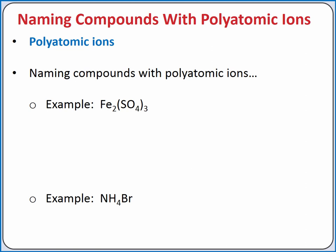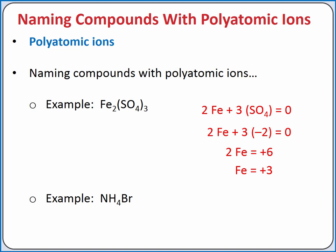For example, let's name Fe₂(SO₄)₃. SO₄ is the polyatomic ion sulfate. Iron is a type 2 metal, so we need to use the charge of sulfate to determine the charge of iron. We know the formula unit is overall neutral, so 2 times the charge of iron plus 3 times the charge of sulfate equals 0. Sulfate has a 2− charge, so solving for iron, we see that it has a 3+ charge. So the name of our ionic compound is iron(III) sulfate.